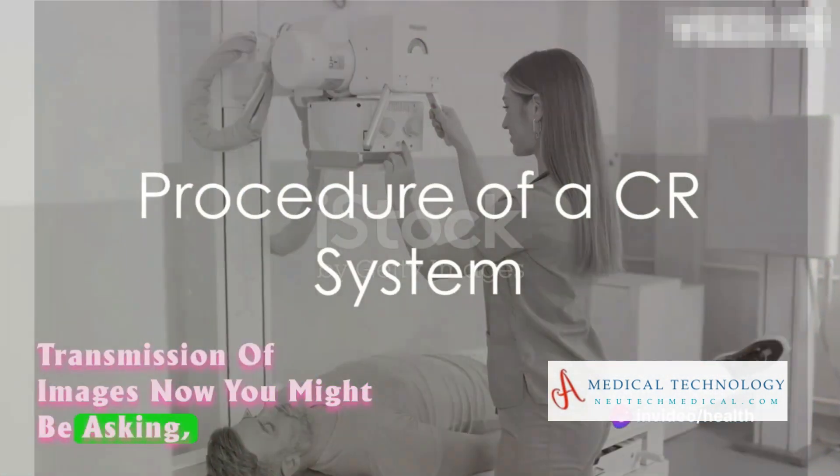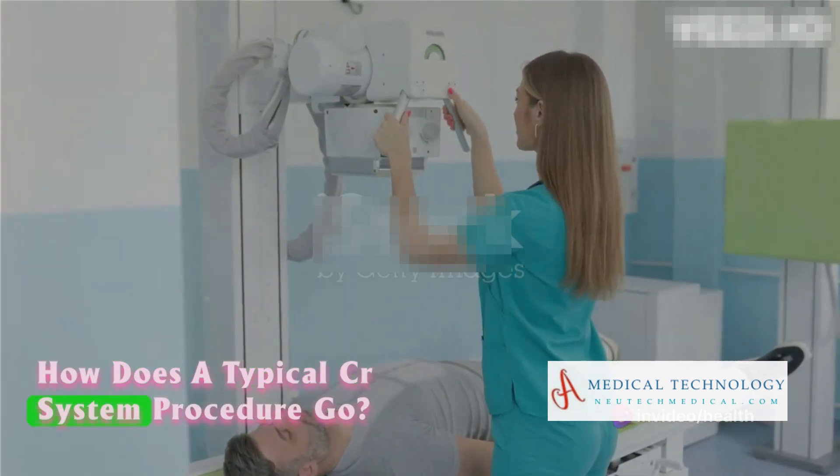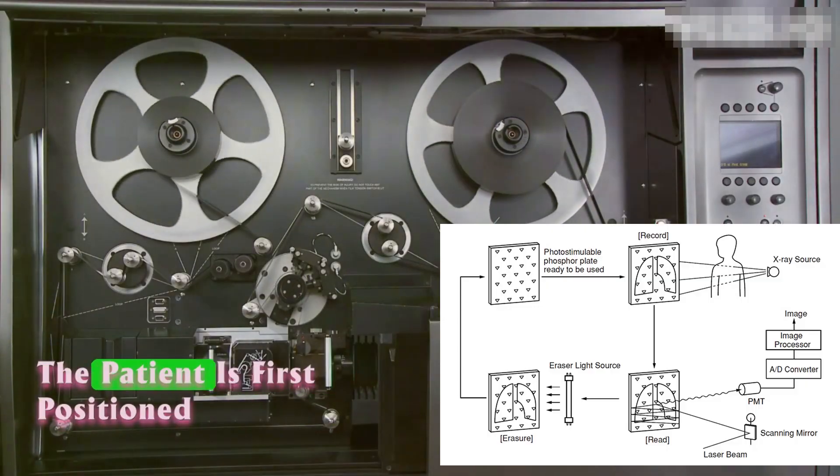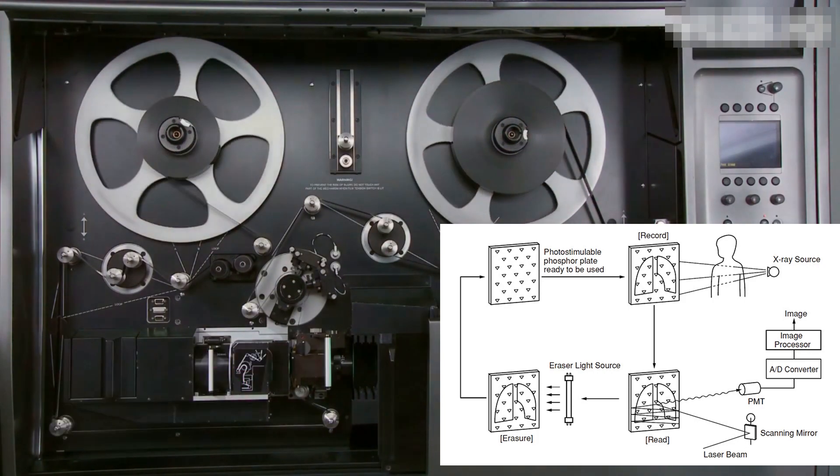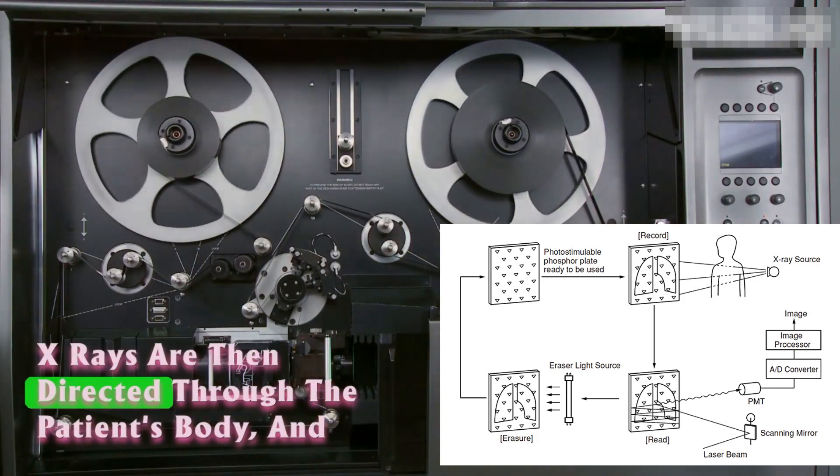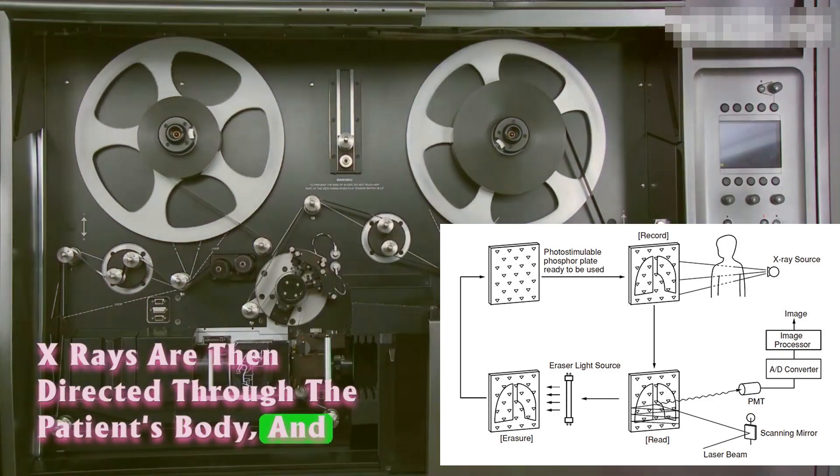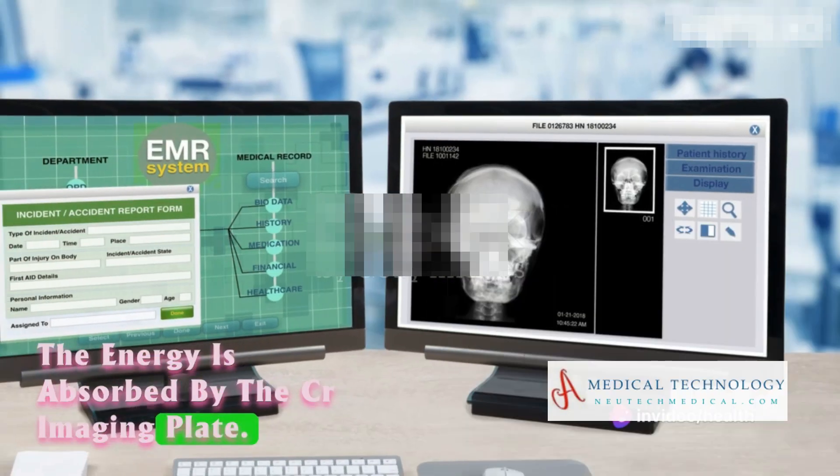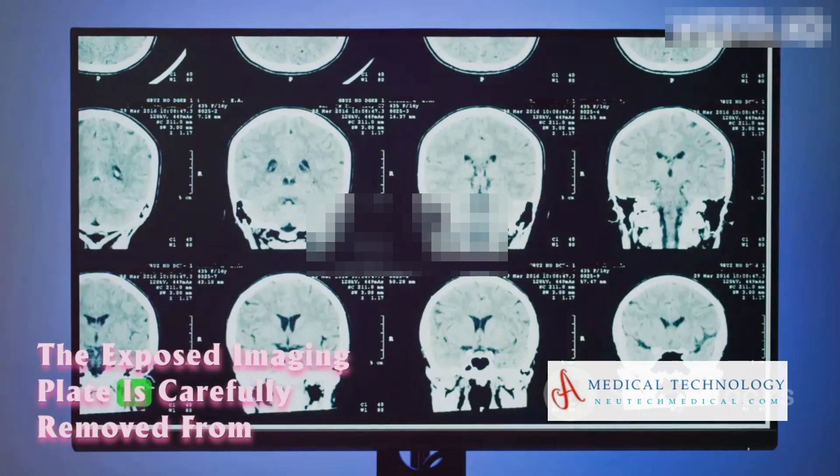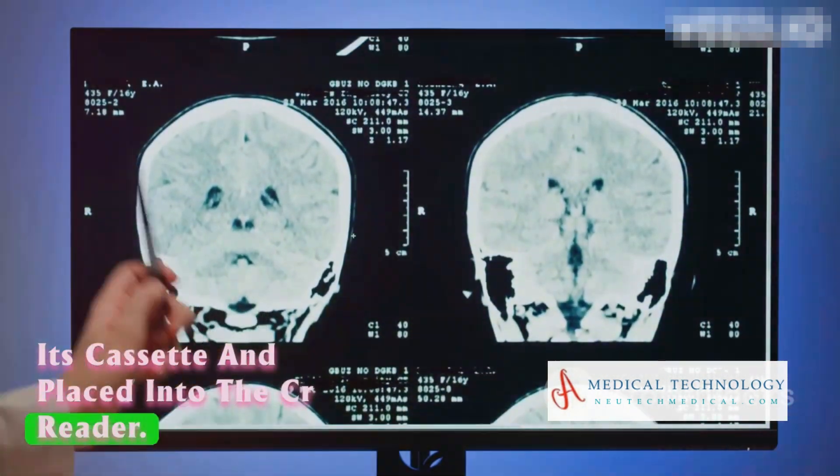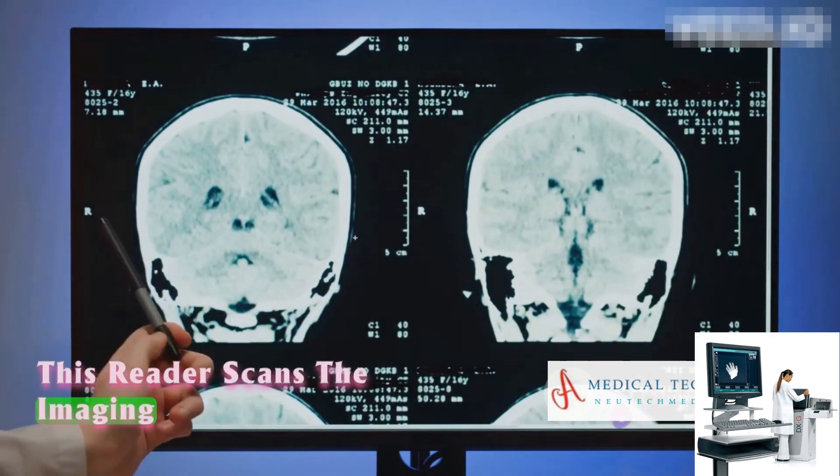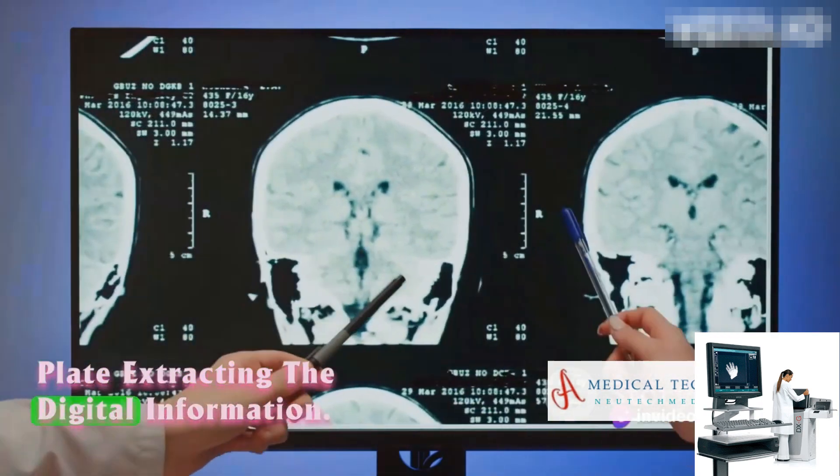Now, you might be asking, how does a typical CR system procedure go? The patient is first positioned for the specific radiographic examination. X-rays are then directed through the patient's body, and the energy is absorbed by the CR imaging plate. The exposed imaging plate is carefully removed from its cassette and placed into the CR reader. This reader scans the imaging plate, extracting the digital information.